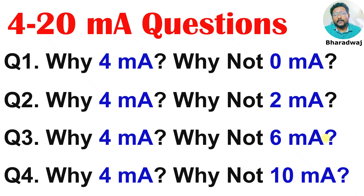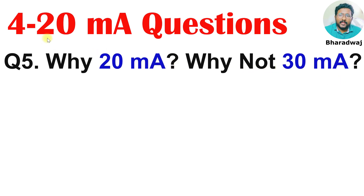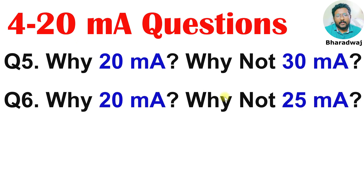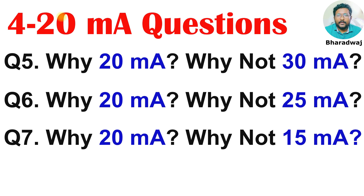And a few more questions. Why not 30 mA? If you see the full scale value, why 20 mA? Why not 30 mA? We can also use 30 mA. Similarly, why not 25 mA? Why not 15 mA? We can use 4 to 15 mA as a range, or 4 to 30 mA, or 4 to 60 mA. Why are we using 20? Similarly, why are we using 4?